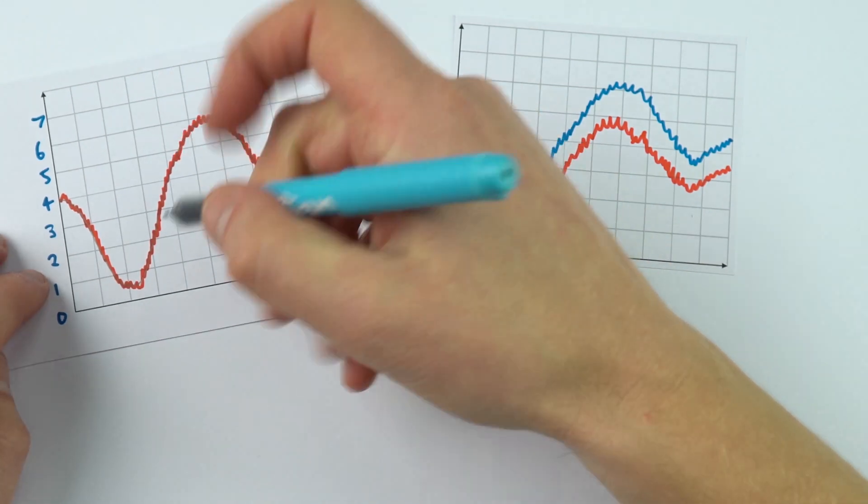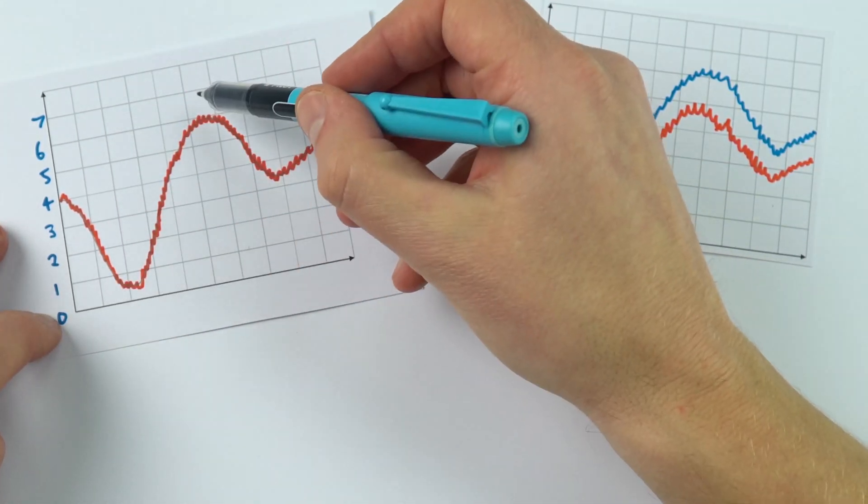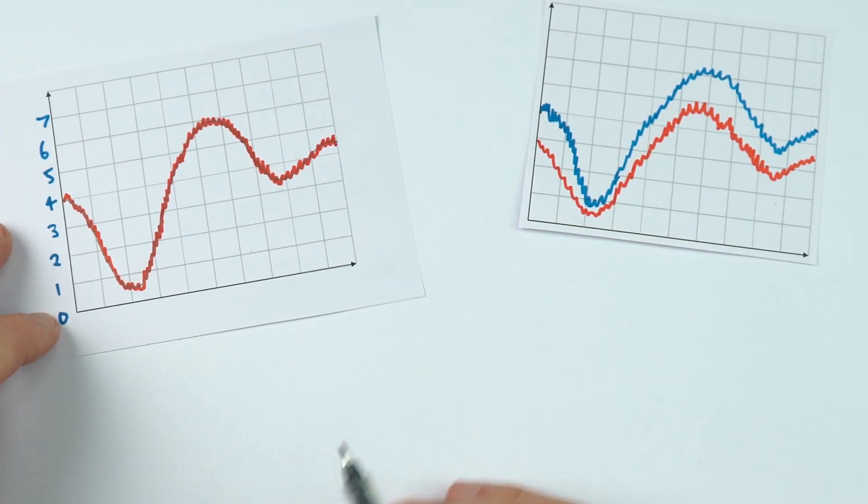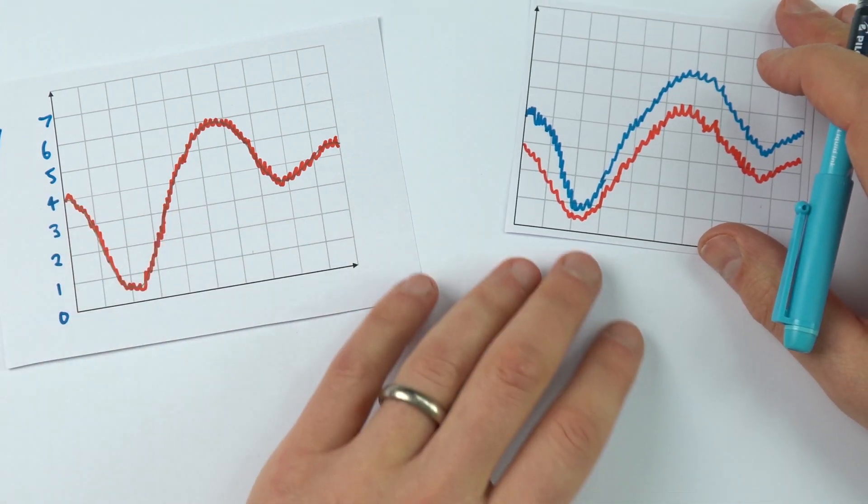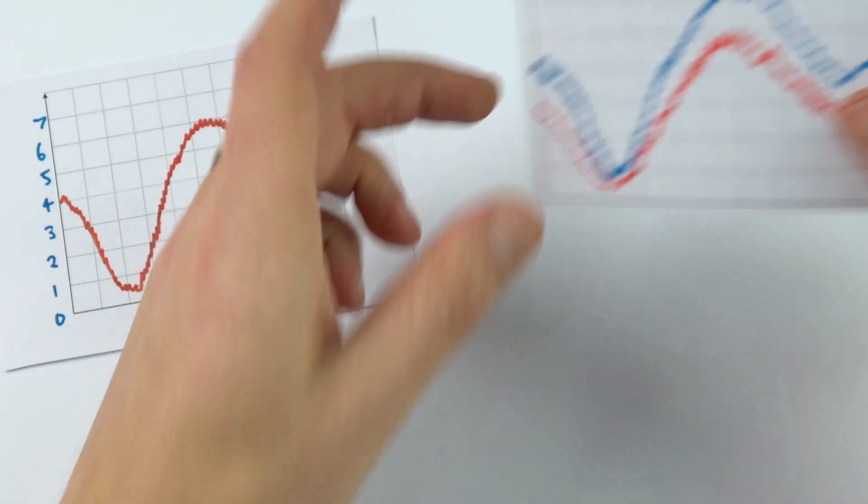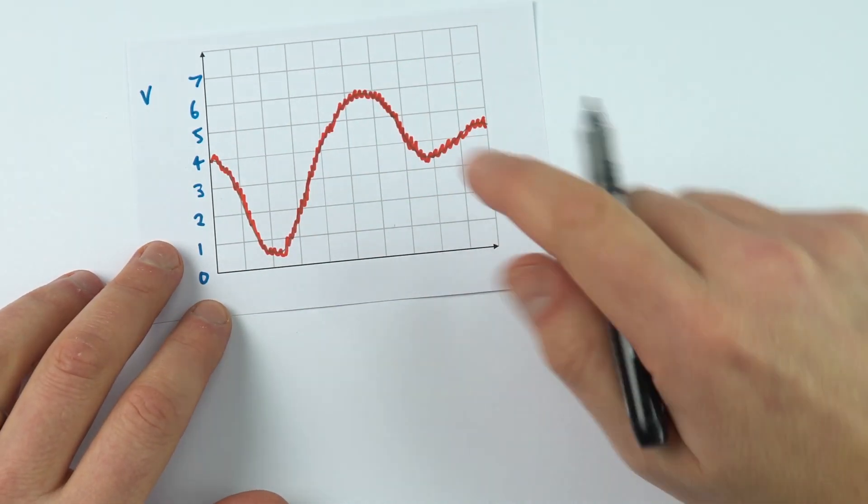Analogue just means it could have any value so this signal here could be any value between zero and seven, it could be 5.5, it could be 3.2, it could be any one of these values. To get over the problems of using analogue communications we send things digitally and the way we do that is we sample this signal.